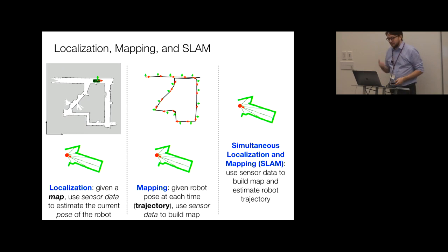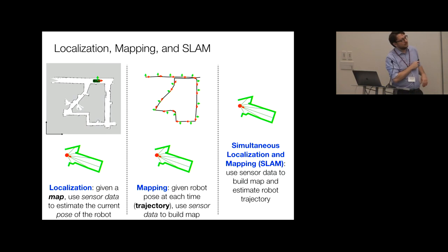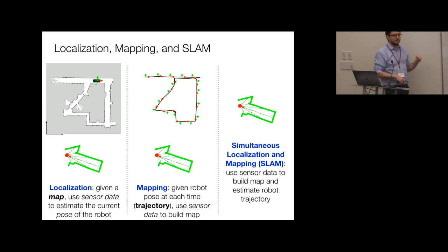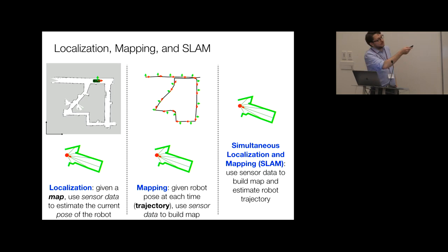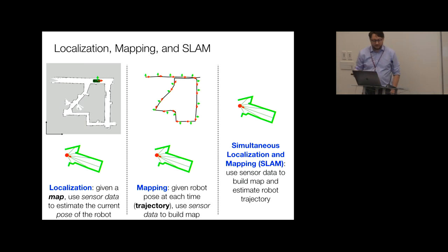The localization problem: given a map of the environment — for example, an occupancy grid map — and sensor data acquired by the robot, the task is to estimate the current pose of the robot with respect to the map. The mapping problem: given the trajectory of the robot over time and all sensor measurements, the task is to build a map of the environment.